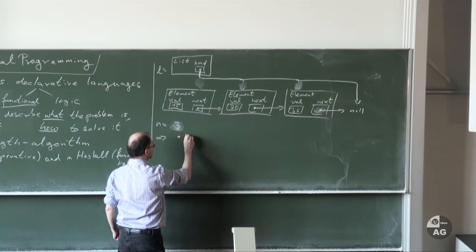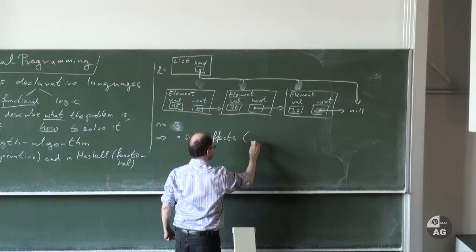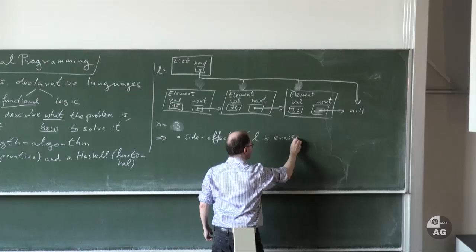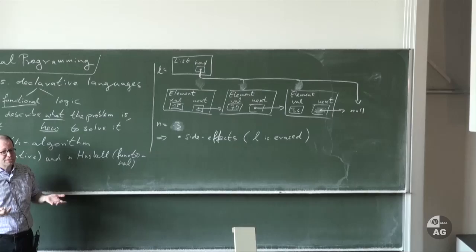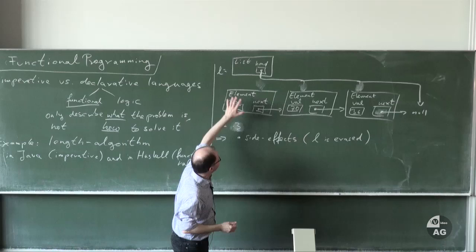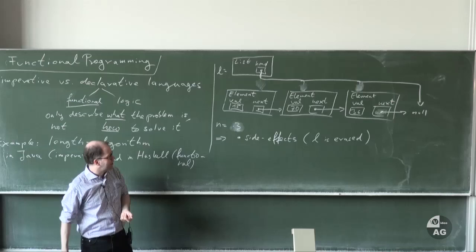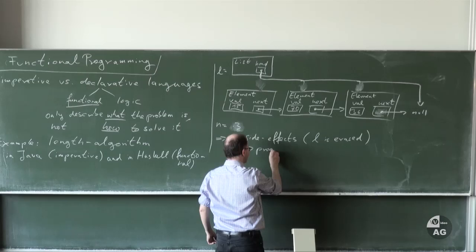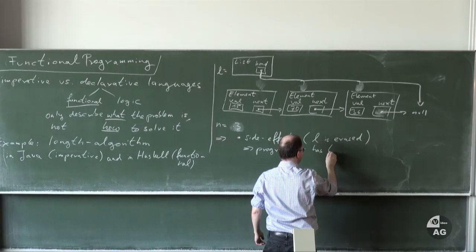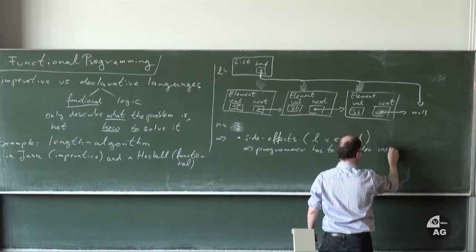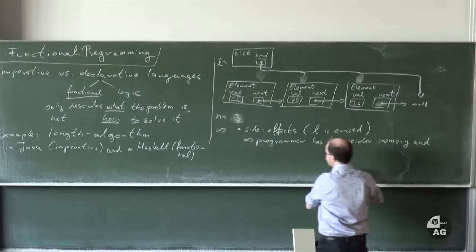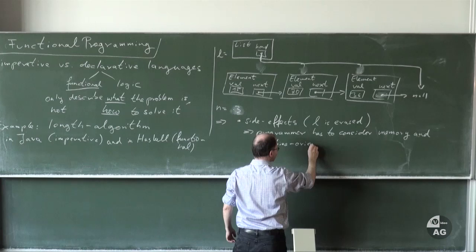Programs can have side effects — here, the list l is erased as a side effect. This means the programmer has to think about what happens in the memory: pointers, what happens in memory, whether side effects occur. Some side effects are desired, some are undesired — that's something the programmer has to keep in mind. The programmer really has to think about the machine, what happens in the memory of the computer, and machine-oriented details. This is a typical feature of imperative programming.